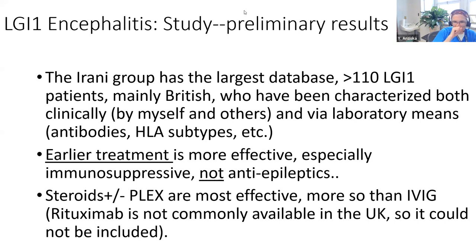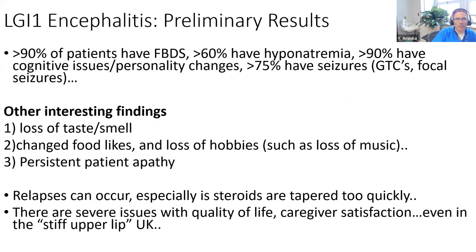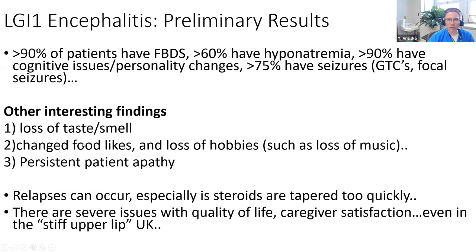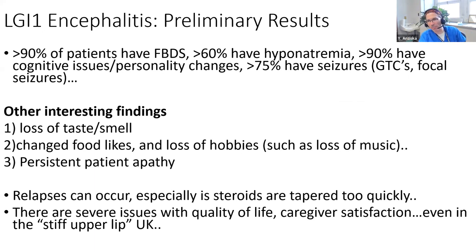Looking at LGI1 data from registries in England and Germany: earlier treatment is better, PLEX is better than no PLEX, and probably works better than IVIG. Also interestingly, during a sabbatical we found that many LGI1 encephalitis patients had loss of taste and smell - interesting in the context of COVID experience - loss of hobbies, and changes in food preferences. One person who hated chocolate began to like it, and vice versa. The apathy can be hard to recognize because people assume it's just normal aging.